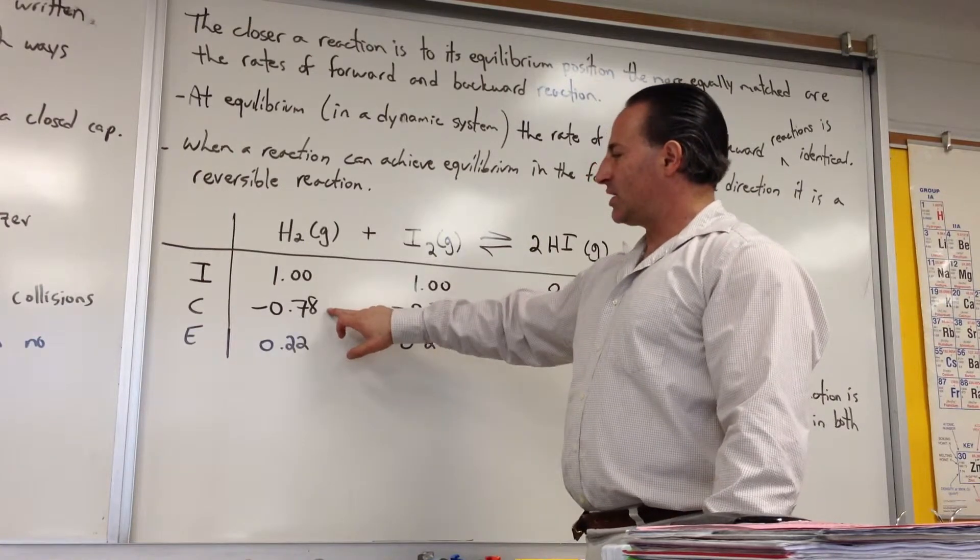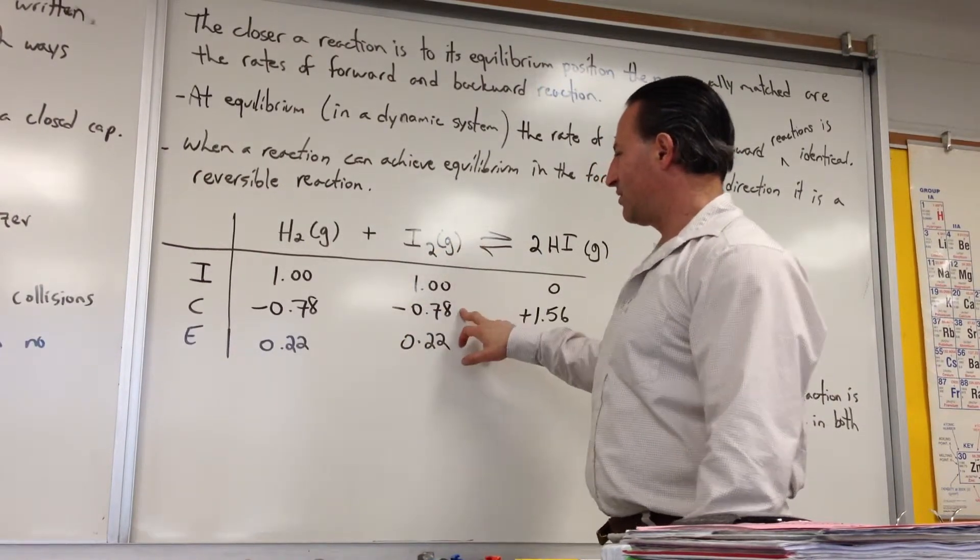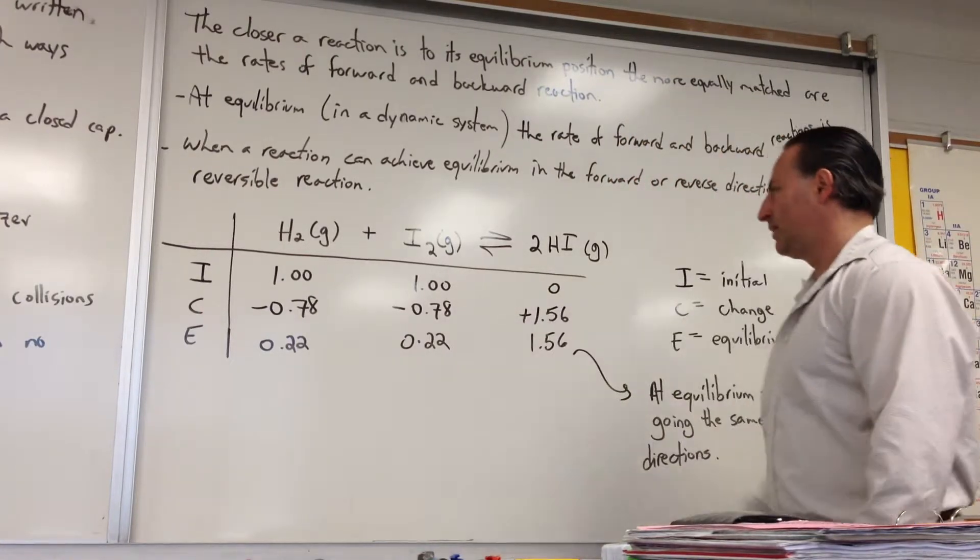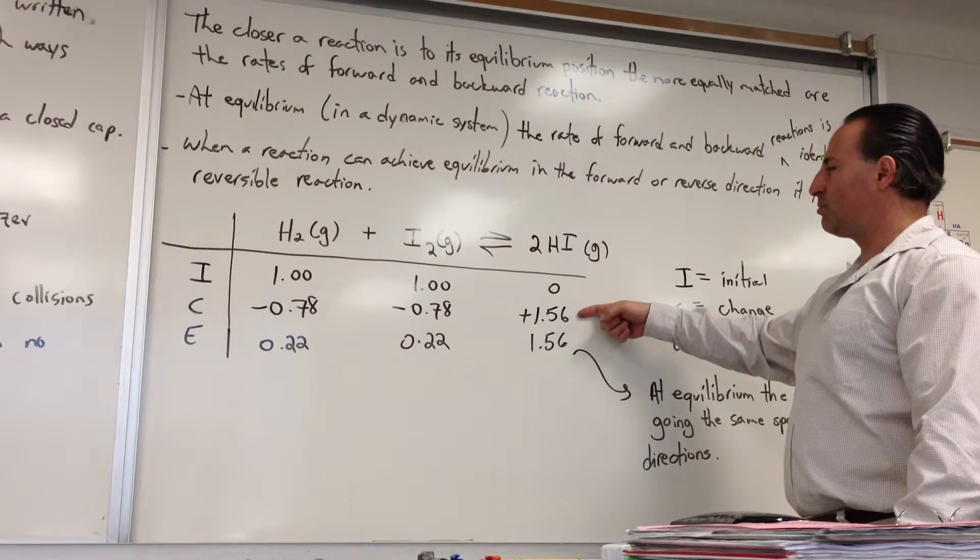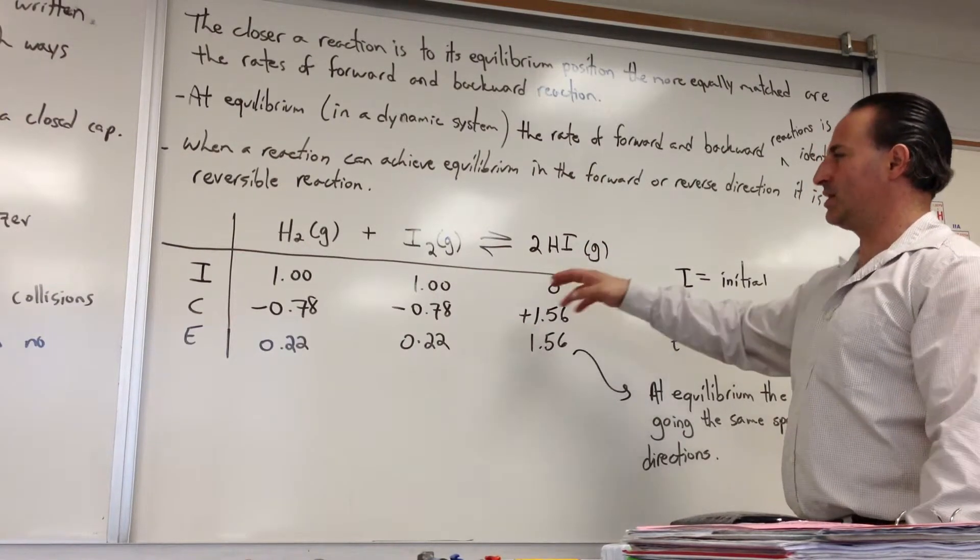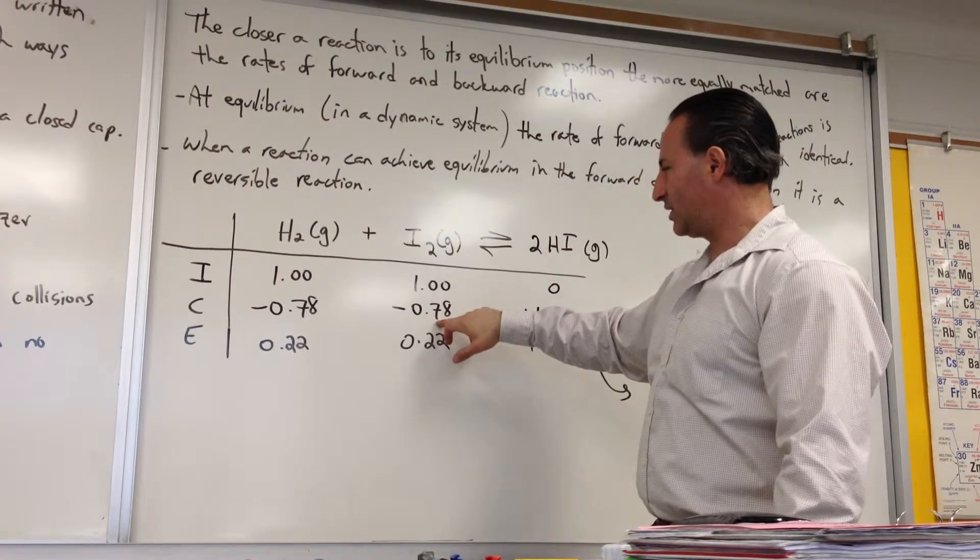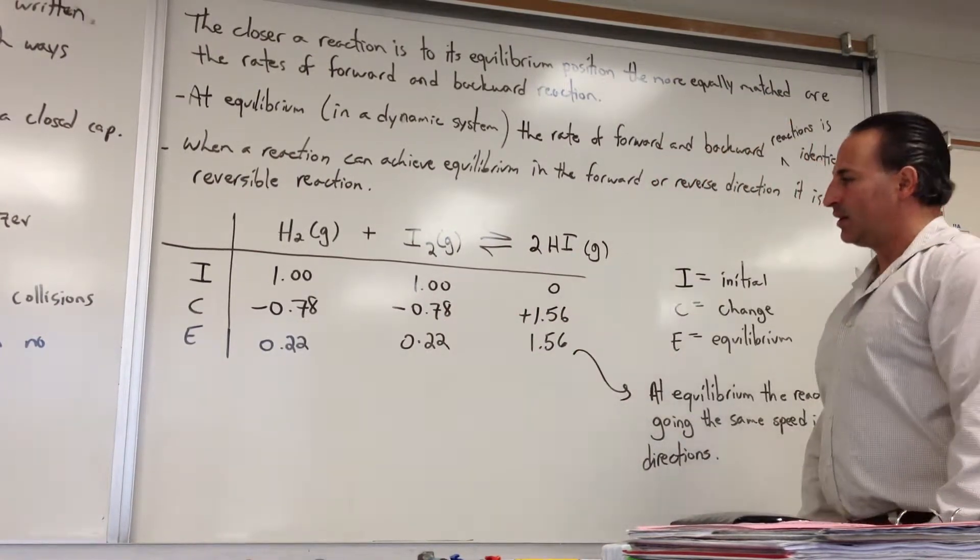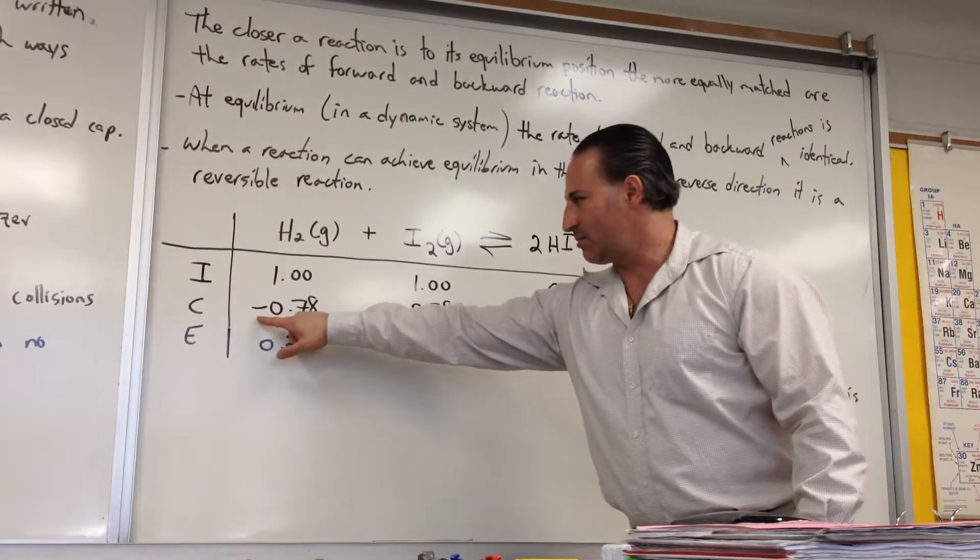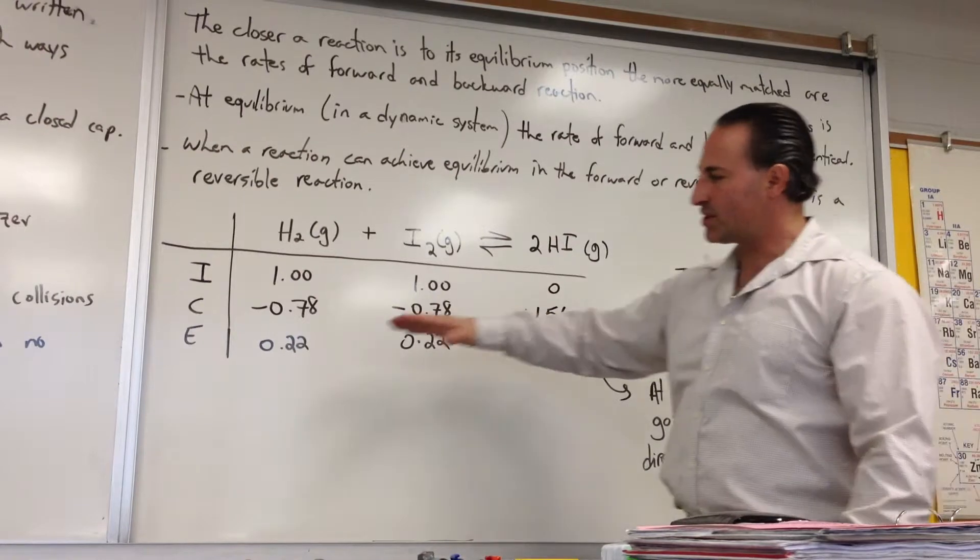During the change, let's say 78% of the hydrogen gets used up, and as well 78% of the iodine. What would happen to the concentration of hydroiotic acid? Well, it would be 1.56 because the stoichiometric coefficient is 1 to 2. So for every one mole of iodine used, two moles of hydroiotic acid would appear. So this is the change, that's why this is minus because it's decreasing, this is plus because it's increasing.